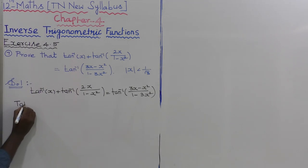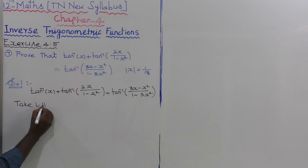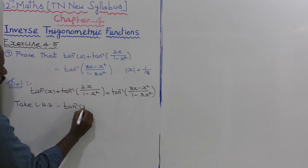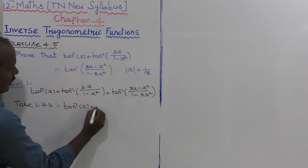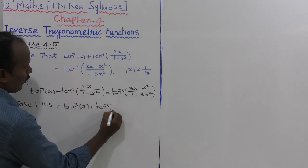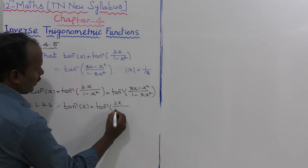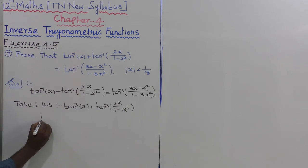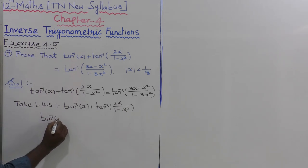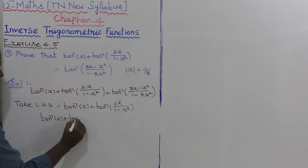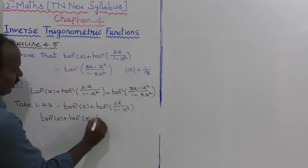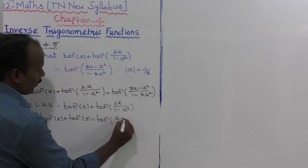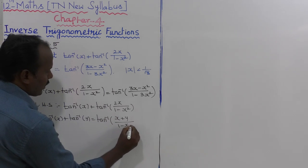Let us take the values of the left-hand side. LHS is tan inverse of x plus tan inverse of 2x divided by 1 minus x squared. This uses the formula: tan inverse of x plus tan inverse of y is equal to tan inverse of x plus y divided by 1 minus xy.